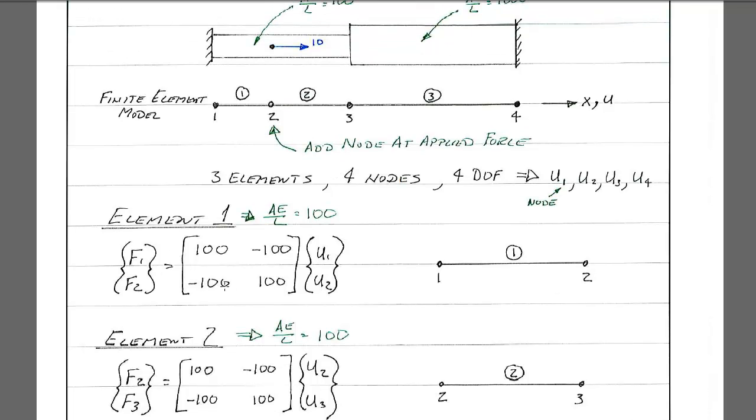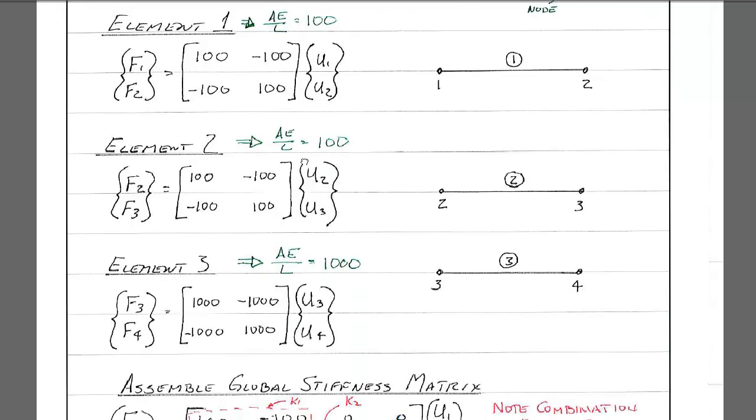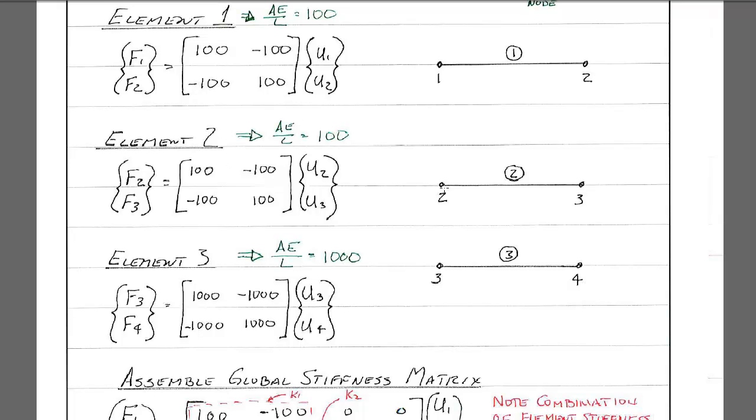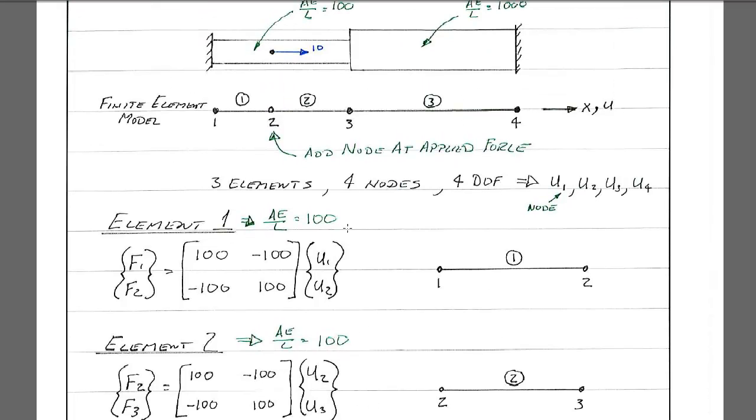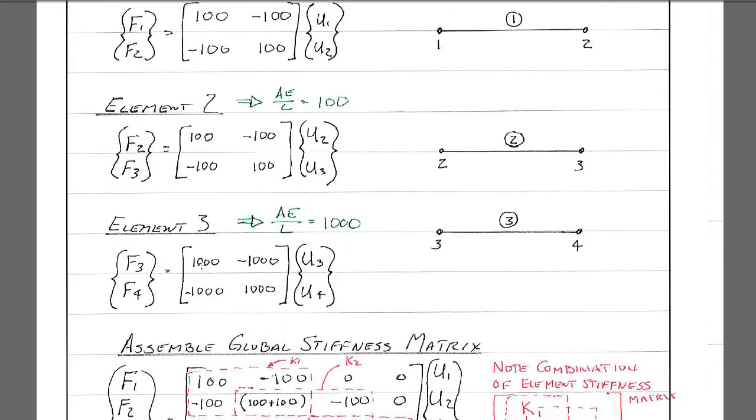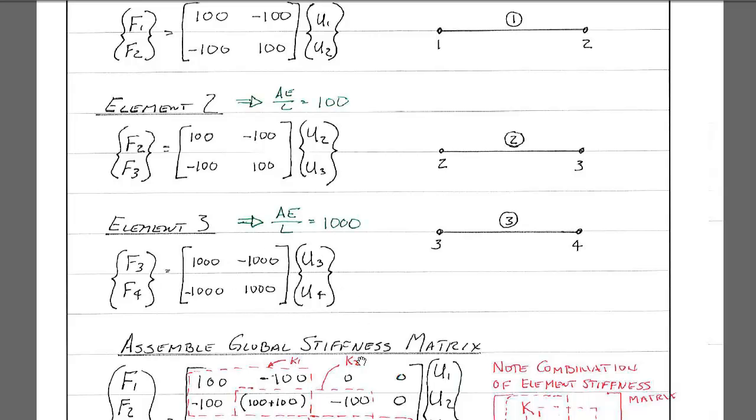So there's the stiffness matrix for element 1. So for element 2, it's really the same, although we're talking about node 2 and node 3. So we have force 2, force 3, displacement 2, displacement 3. This looks the same. Then for element 3, we have the bigger section here. So at element 3, that is node 3 and node 4. So for element 3, we have 1,000 and negative 1,000, negative 1,000, and we have the correct node numbers on there.